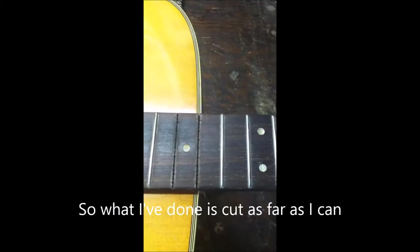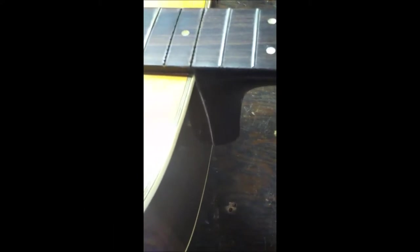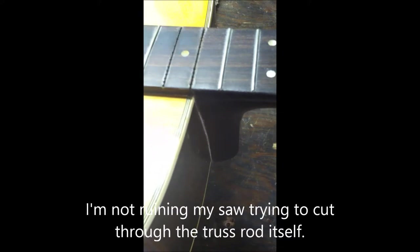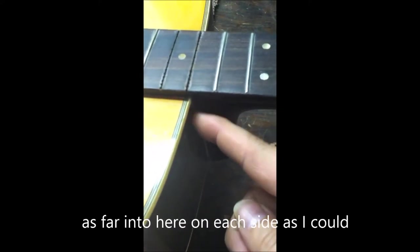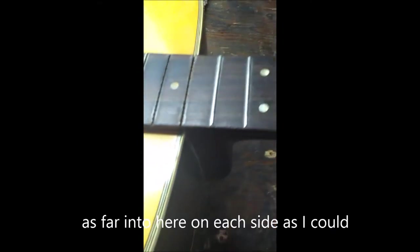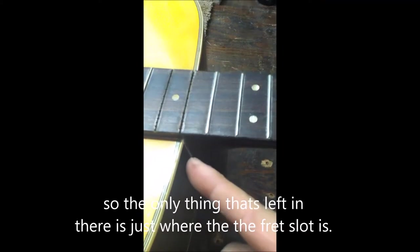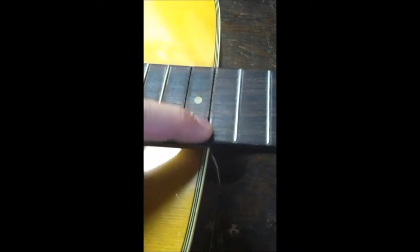So what I've done is I cut as far as I can without ruining my saw trying to cut through the truss rod itself. I cut as far into here on each side as I could to get all the wood cut, and so the only thing left in there is just where the truss rod is. Then I've also cut down here at this fret.